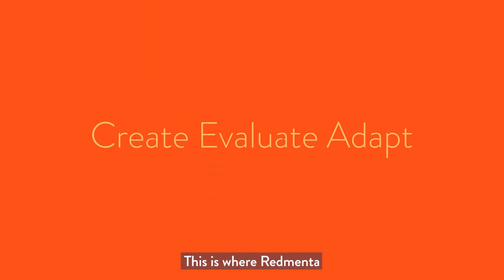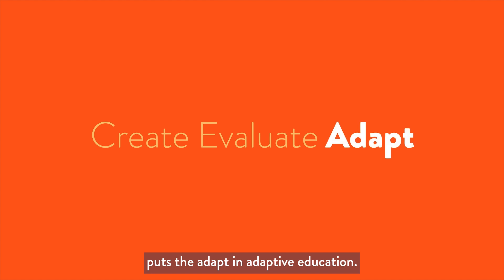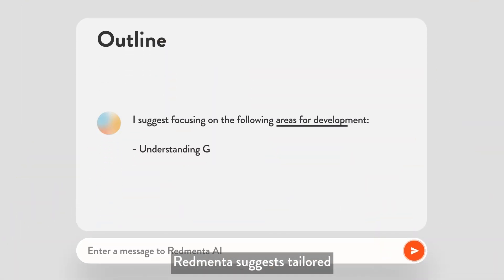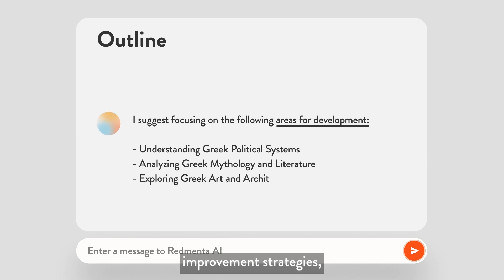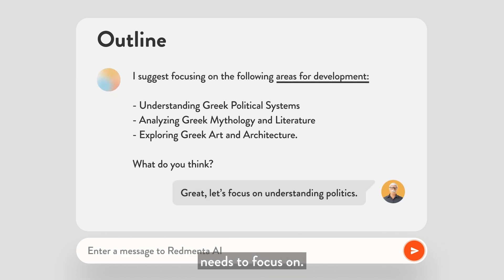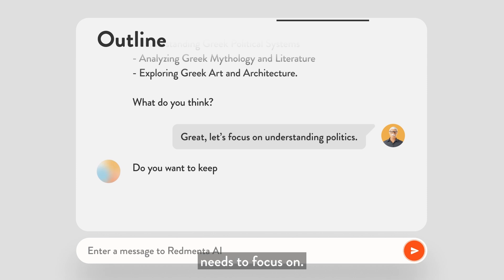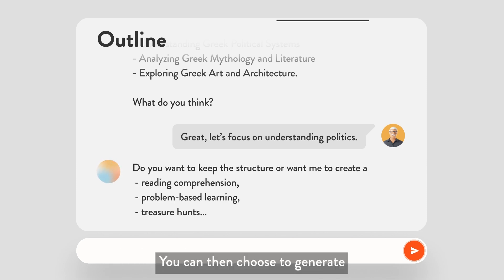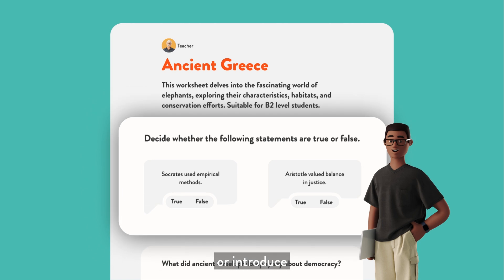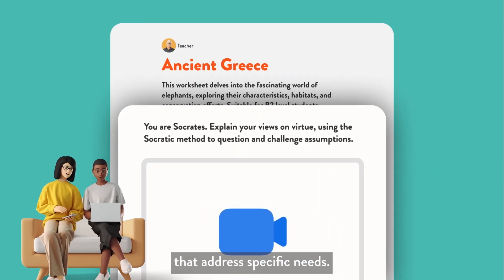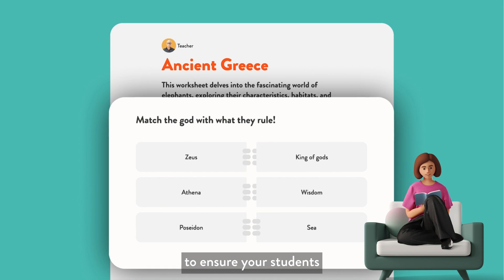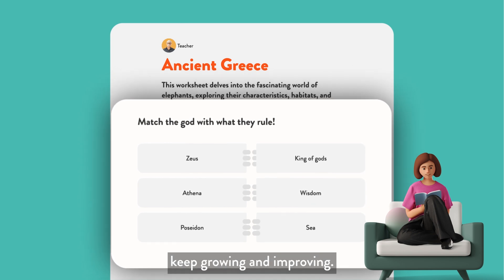This is where RedMenta puts the ADAPT in adaptive education. Based on the evaluations, RedMenta suggests tailored improvement strategies, pinpointing areas that each student needs to focus on. You can then choose to generate familiar activities to reinforce learning, or introduce new challenges that address specific needs. Each adaptation is crafted to ensure your students keep growing and improving.